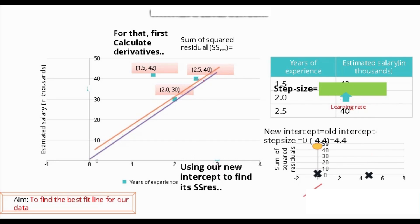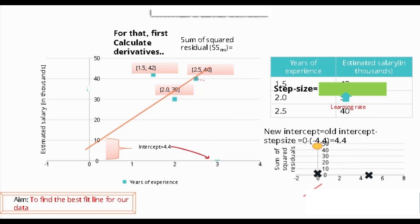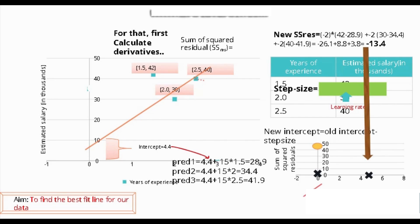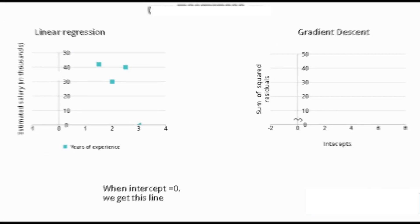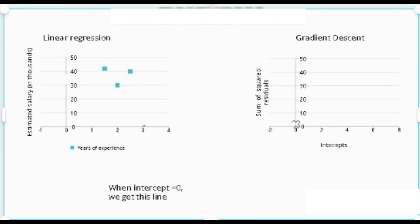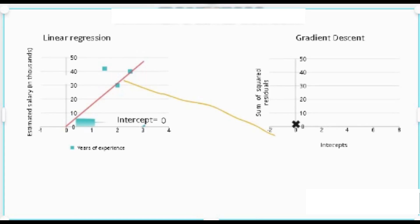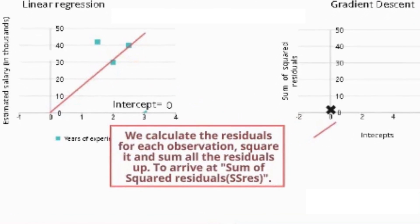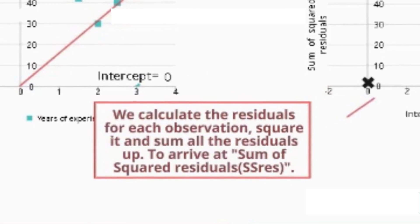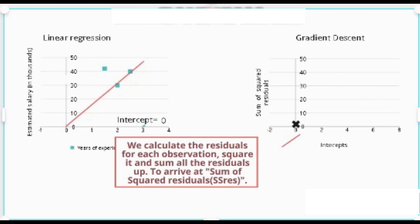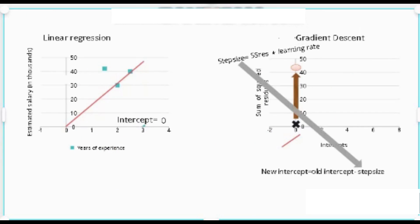We use the new intercept for new predictions. Applying the derivative on the residuals again, we get our new sum of squared residuals: negative 13.4, which is lower than the previous one, and an intercept of 4.4, which is higher. To recap: we passed a line through our data with intercept = 0, calculated the residual for each observation, squared and summed them to arrive at the sum of squared residuals — 44 — and then used two equations to get a new intercept.